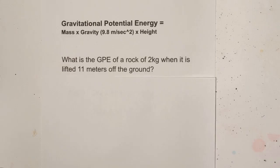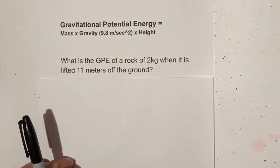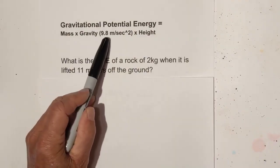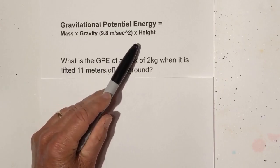Welcome to MooMoo Math & Science. In this video, let's work on finding the gravitational potential energy. The formula is mass times the gravity constant, which is 9.8 meters per second squared, times the height.